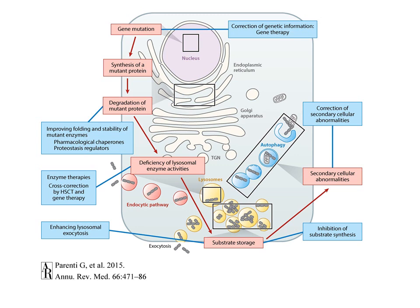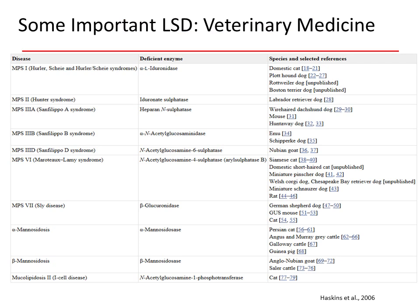Lysosomal storage diseases are associated with mutations in proteins involved in many different lysosomal functions. This can include trafficking of material within the endosome, endoplasmic reticulum, and Golgi apparatus, as well as processes involved in glycosylation and hydrolytic enzyme activity. The pink boxes highlight the progression from genetic mutation to impaired cellular function. The next two slides show some of the lysosomal storage diseases presented to veterinarians and some of the animal species that can manifest the disease.